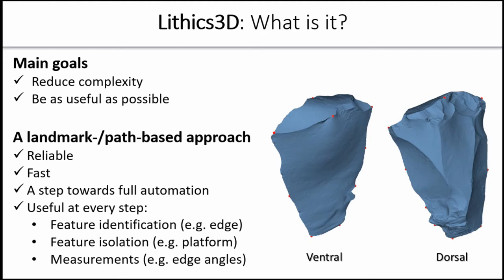In order to do this, I adopted a landmark-based approach, a hybrid approach where the package relies on expert input. Human experts are required to place landmarks at the moment, for example delimiting the platform and around the edges of a flake. There are several advantages to this approach. First, it's reliable because it's supervised by a human expert. It is also fast, and it's a step towards full automation. The idea is to reduce the number of required landmarks and eventually eliminate them altogether. I'm still very much pursuing that goal, just taking it step by step.